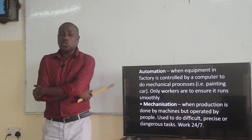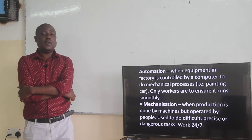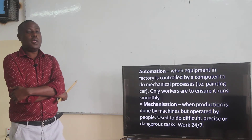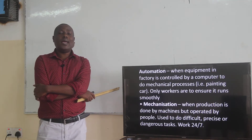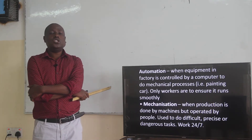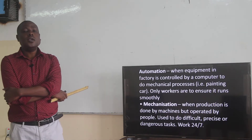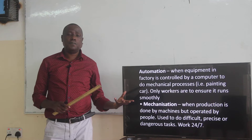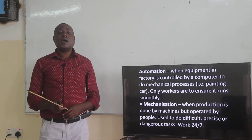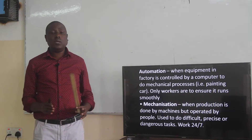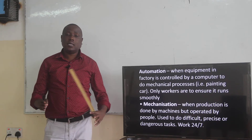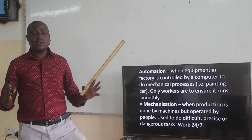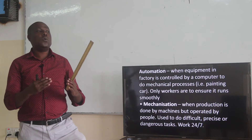Now we want to go a step further and look at what we are referring to as automation. This is when equipment in a factory is controlled by a computer to do mechanical processes — for example, painting cars. We are using the computer to control the production. Workers are only there to ensure it runs. The whole process is being controlled automatically. The computer is going to do all the paint mixing; human beings will only be there to ensure it works.